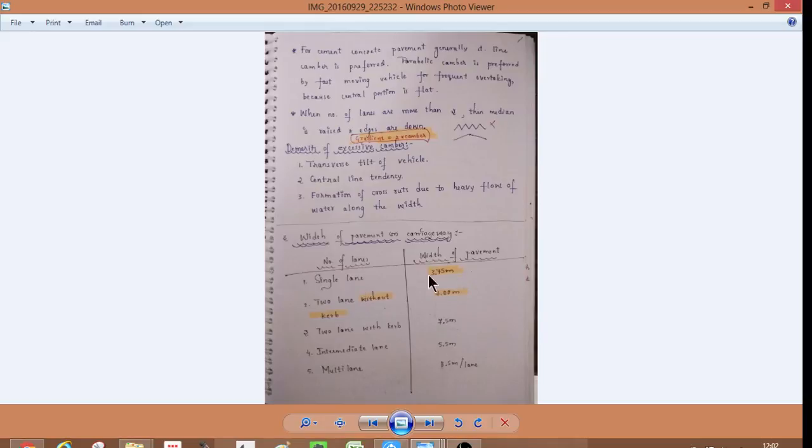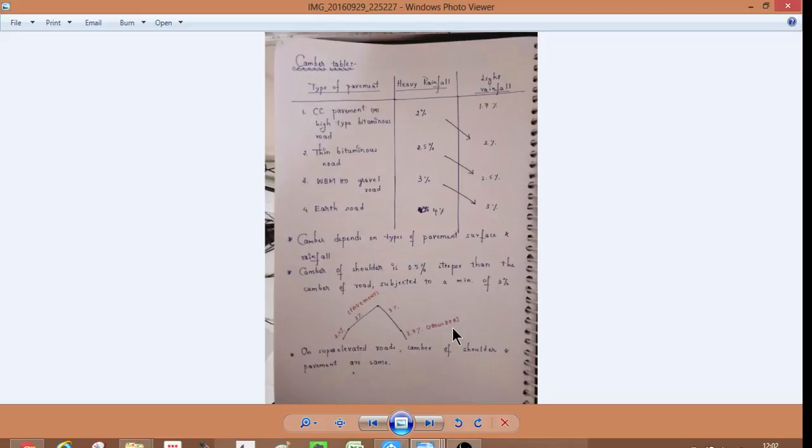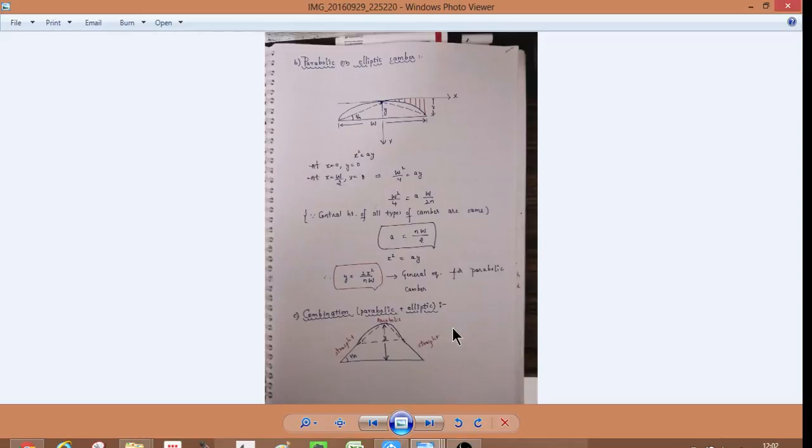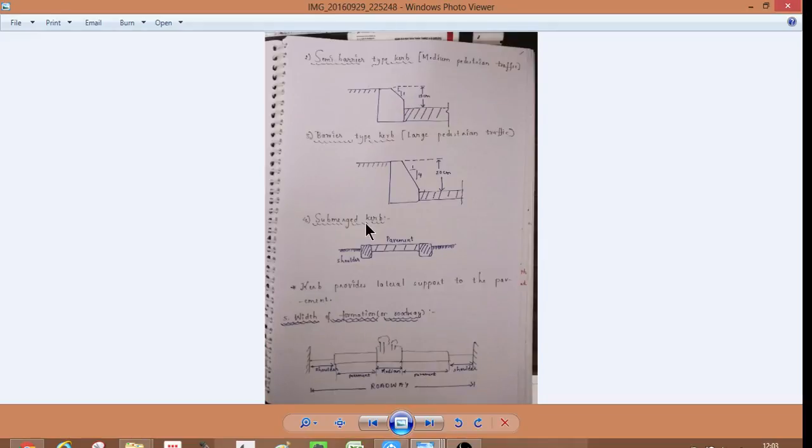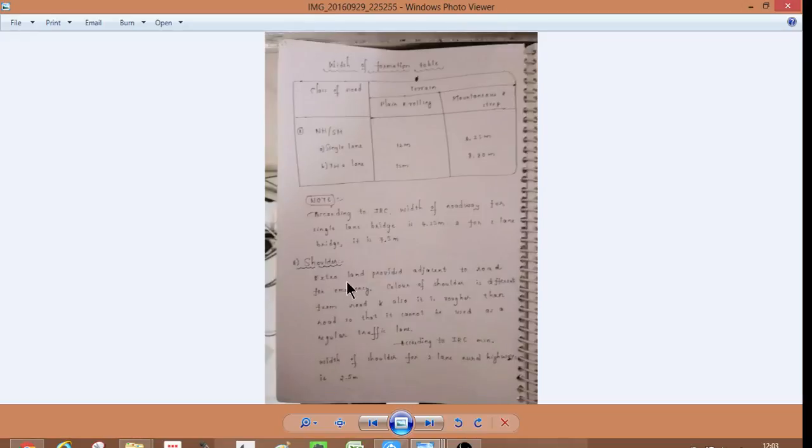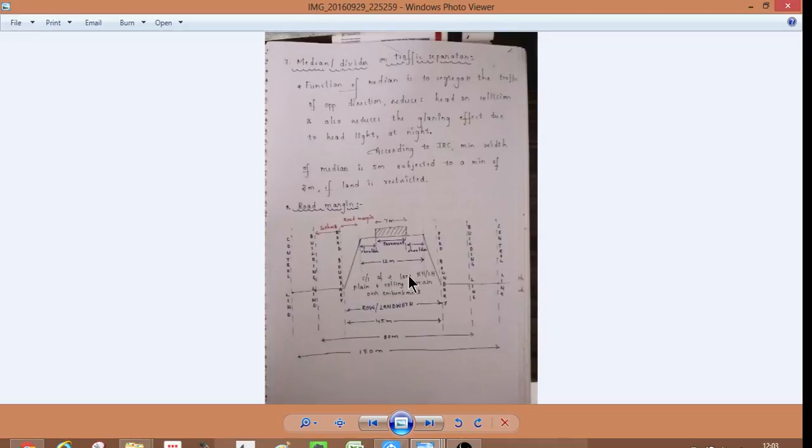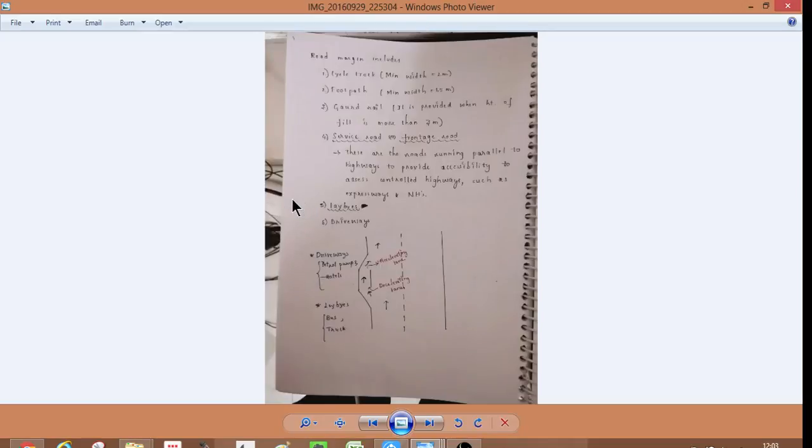So for a single lane, it is 3.75 meters. Two lanes without kerb, it is 7 meters. Two lanes, 3.75 meters is important. Two lanes with kerb is 7.5 meters. So and then what is the kerb, with the formation of roadway. Shoulder, median divider, traffic separator. So lay-bys.